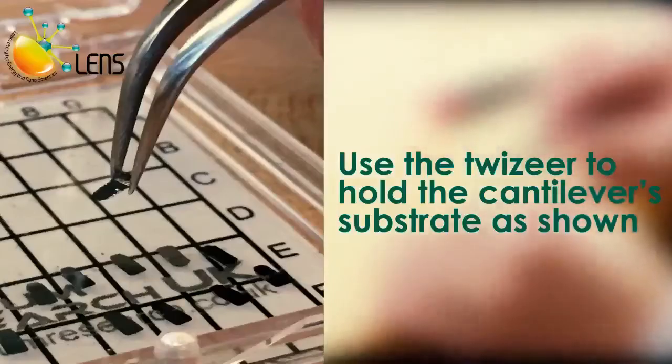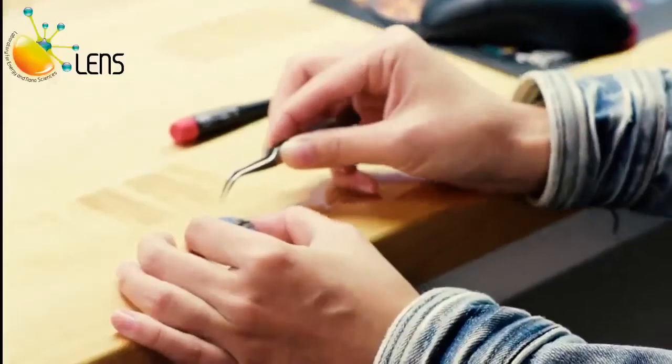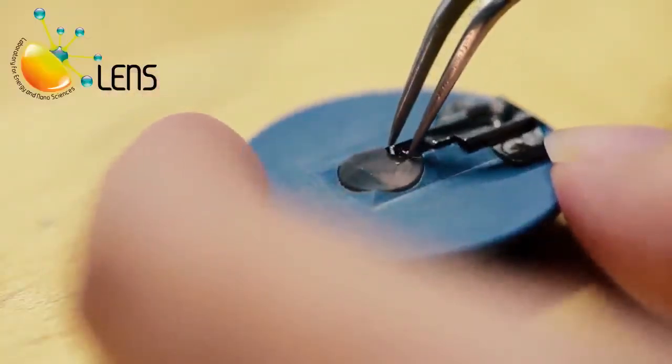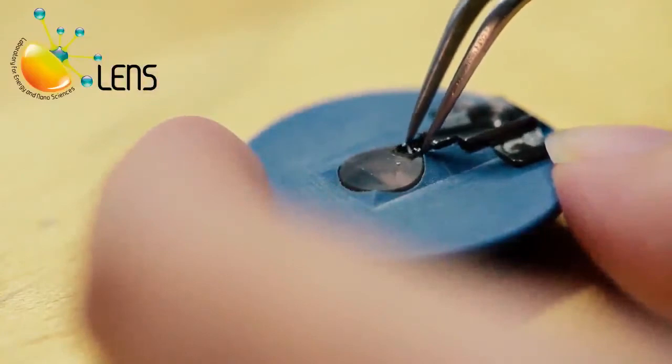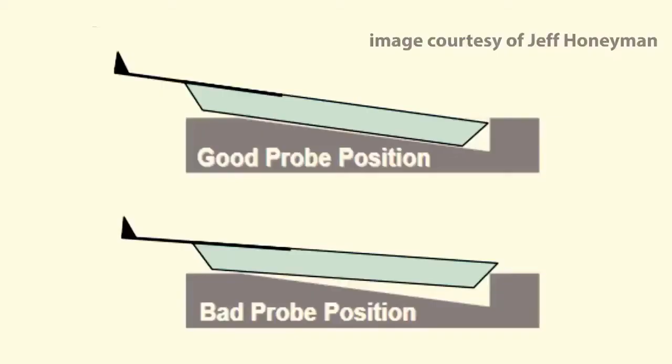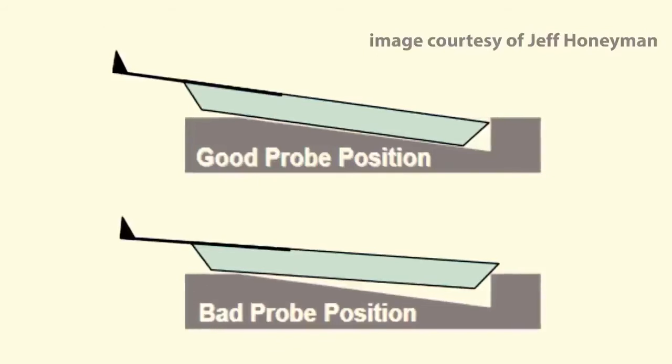Using tweezers, slide the new cantilever, tip side up, beneath the spring clip. You can use a magnifying glass. Verify that the tip is well-seated and aligned in the pocket. Carefully slide the substrate under the clip and tighten the screw. It is advisable not to push the substrate all the way back in the pocket as this can cause the substrate to lift off the floor of the pocket, compromising the deflection signal.